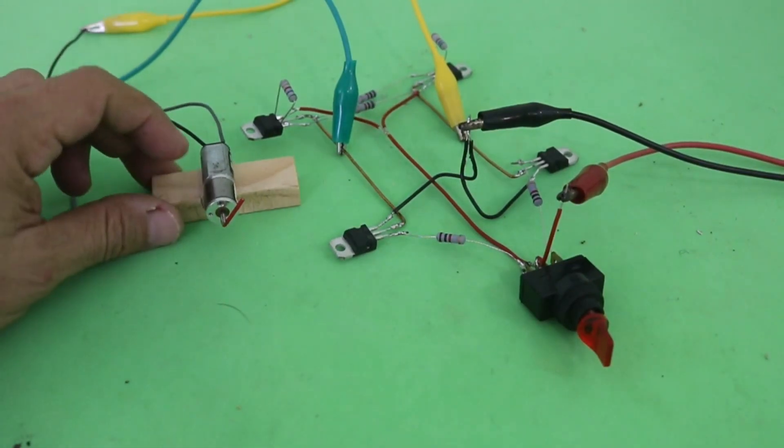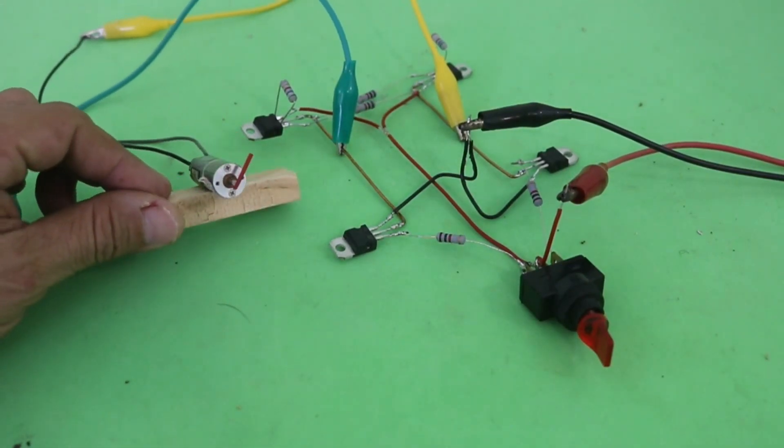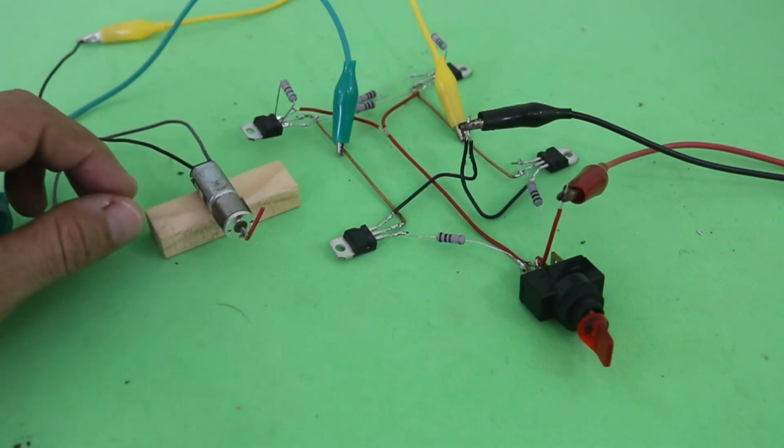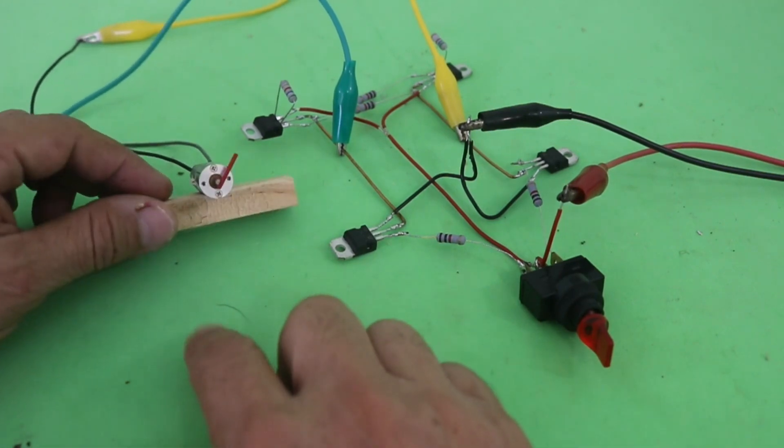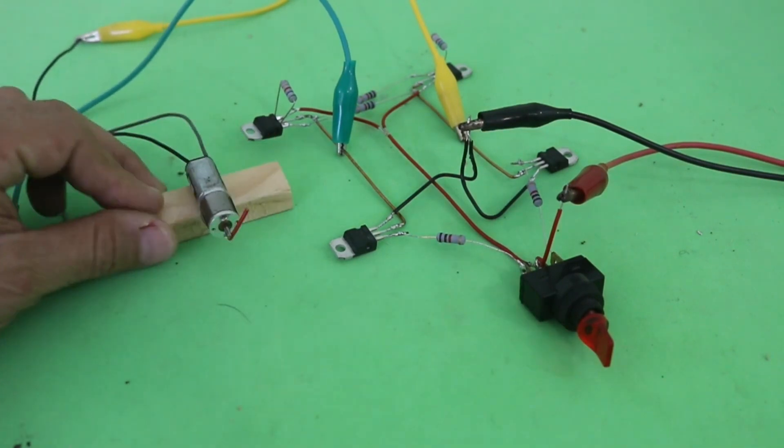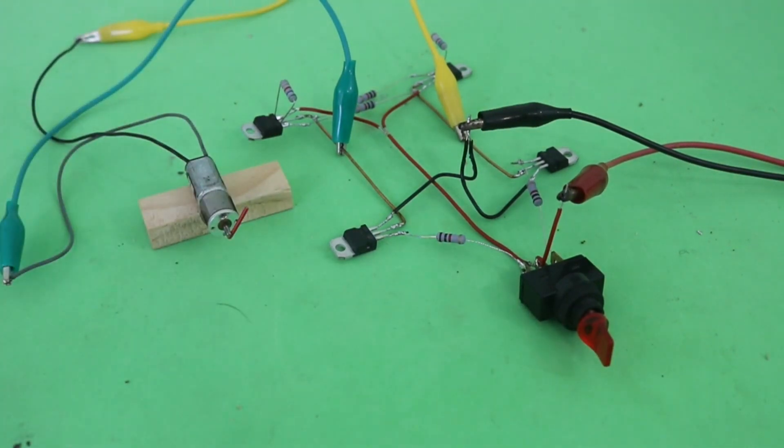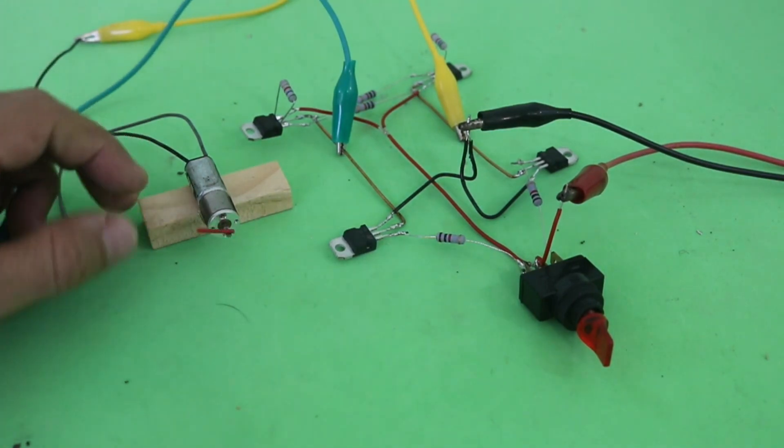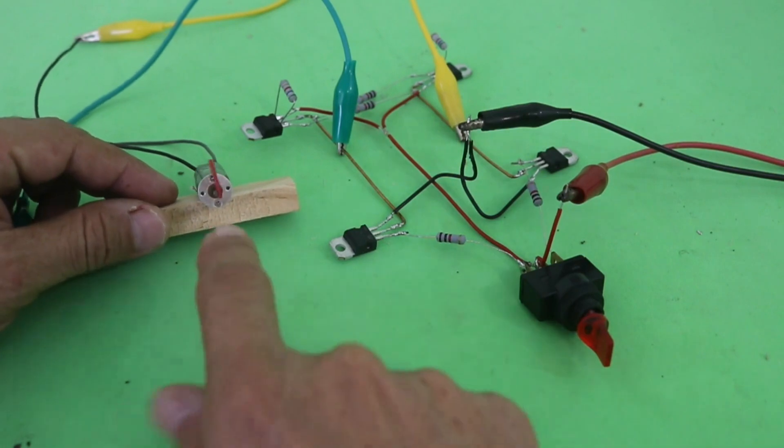I have this small geared motor connected to the circuit, it is a slow rotation motor so that we can observe the direction of rotation. I'm going to turn on the power supply and you can see the motor running clockwise.